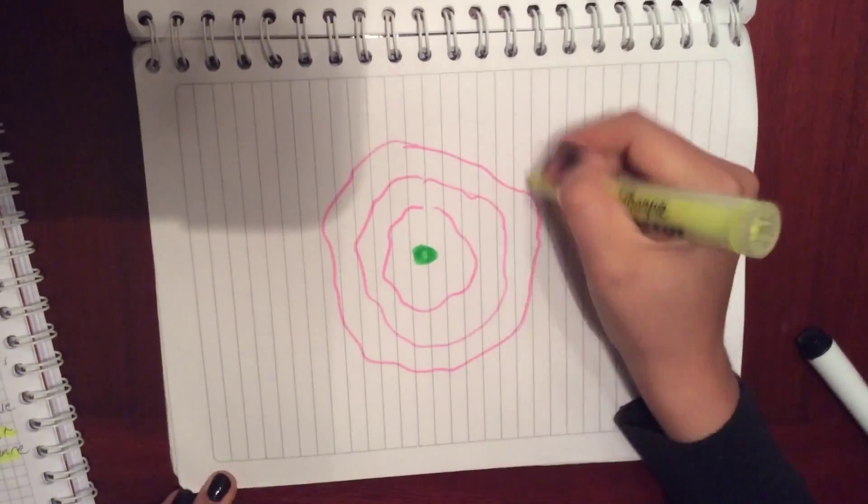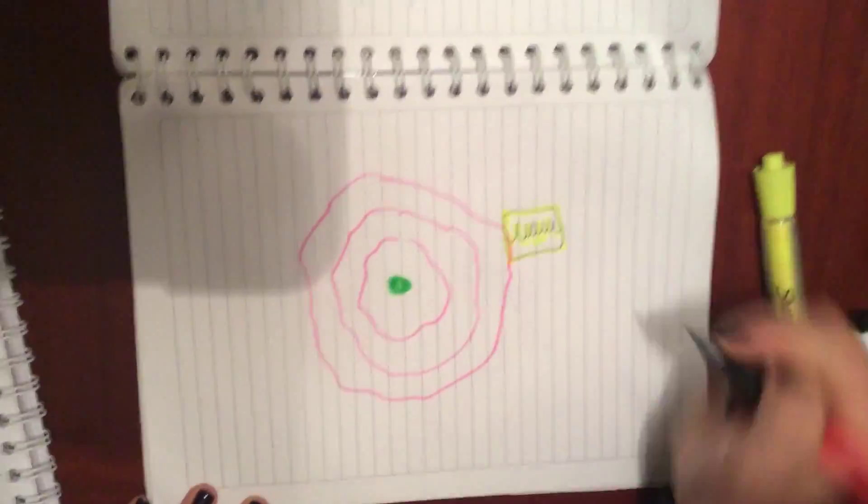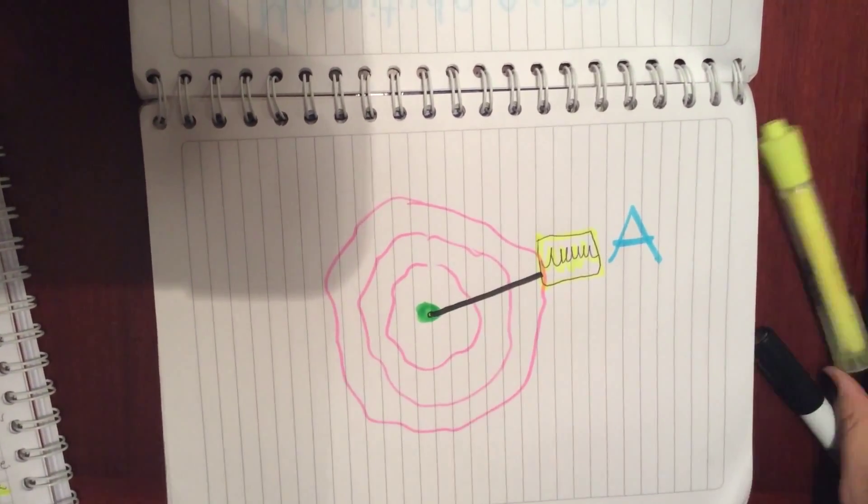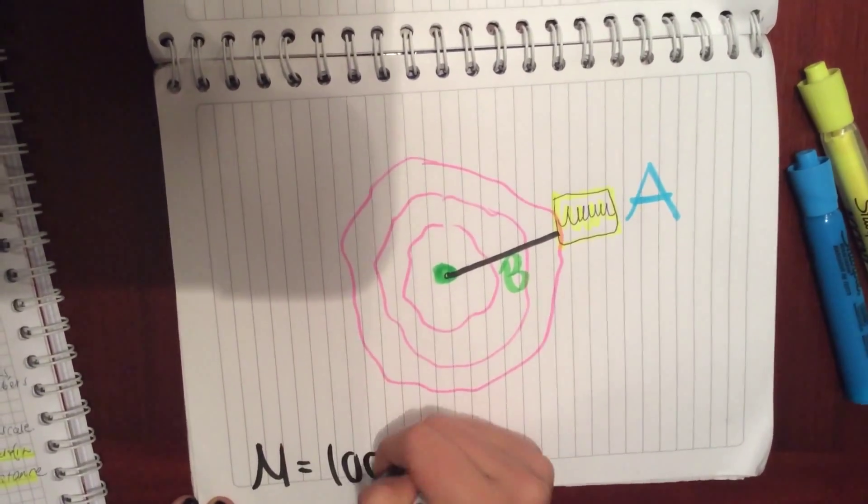In this picture we can see the green dot as the point where the earthquake started, and the yellow part as the seismograph. The distance between them is B, and the answers given by the seismograph will be A.